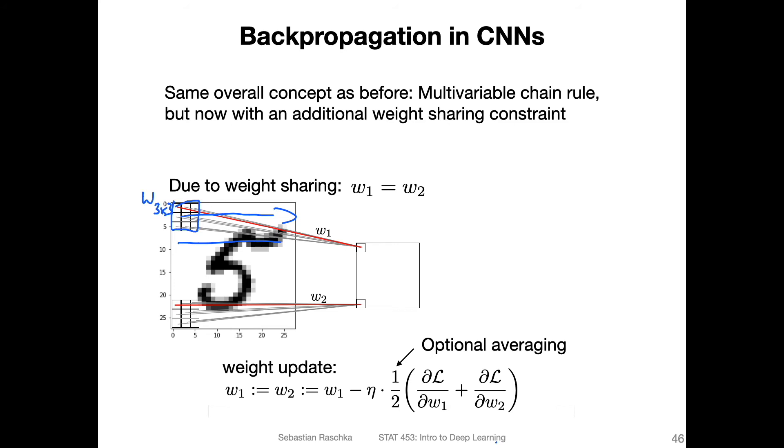So the red line here, this weight, let's call it w1, computes one part of this first value here. When we compute this, it's essentially the sum of the weighted inputs: w1 times x1 plus w2 times x2, and so forth.